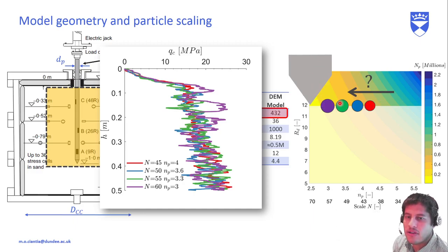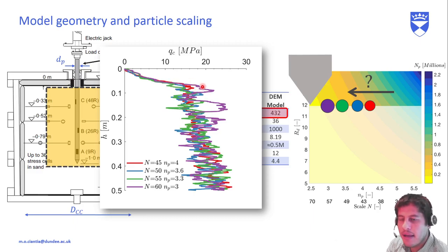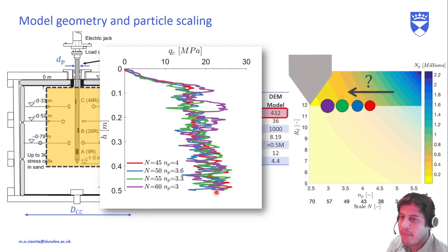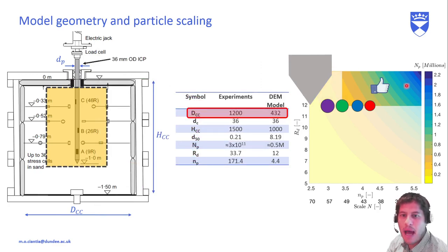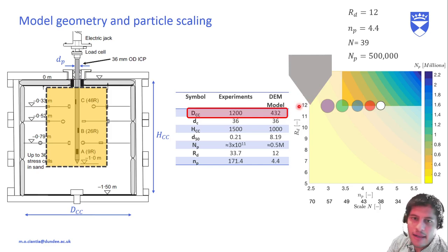The Q_c is the vertical force at the tip divided by the area of the cone. With the purple scaling the stress fluctuates too much, so starting from the green scaling I am somewhat satisfied. I finally selected an even higher scaling — the white dot — because I wanted the highest resolution possible. That is how I decided the main dimensions and the particle scaling.